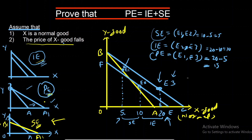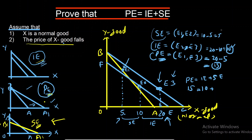Now put all values into the equation: price effect = income effect + substitution effect. Price effect is 15, income effect is 10, and substitution effect is 5. So 15 = 10 + 5, which gives 15 = 15. Left-hand side equals right-hand side. This proves that price effect is equal to income effect plus substitution effect. Let me now explain the same concept briefly in Urdu for those who didn't follow in English.